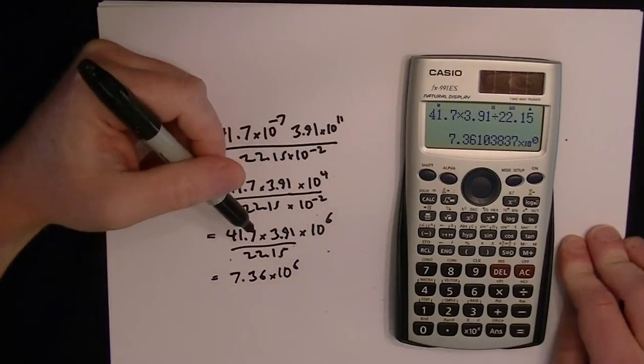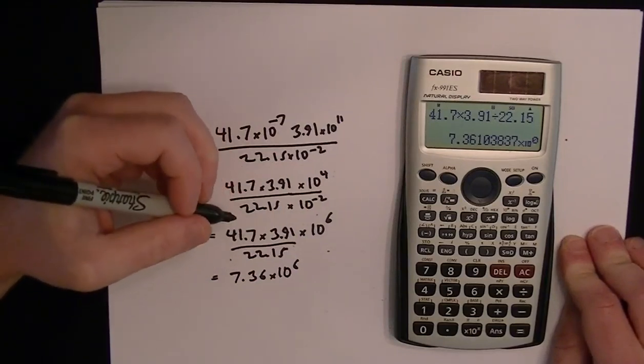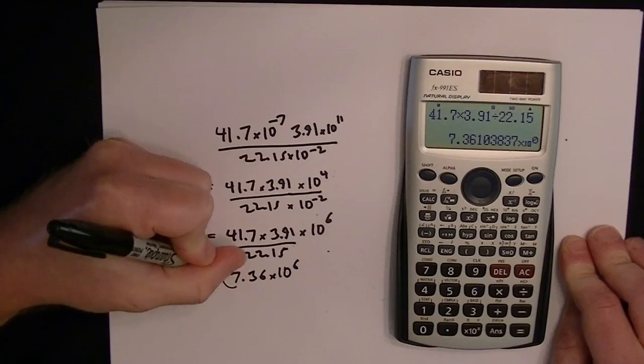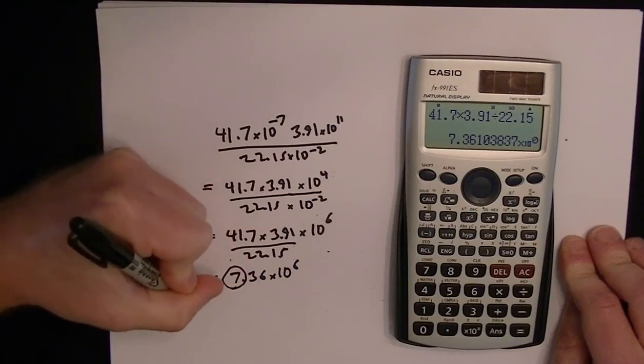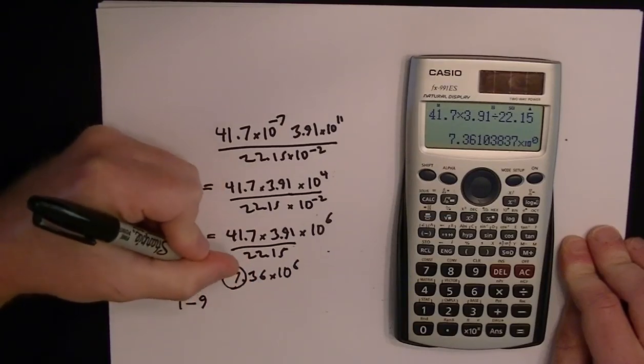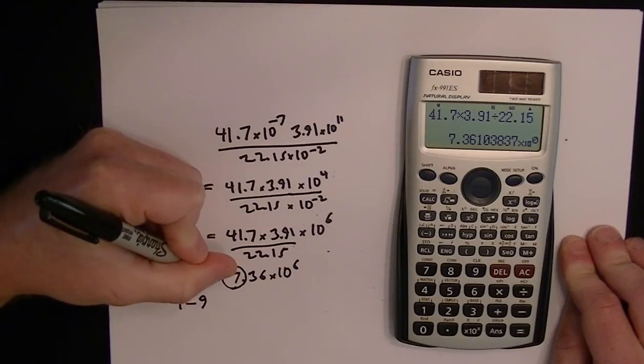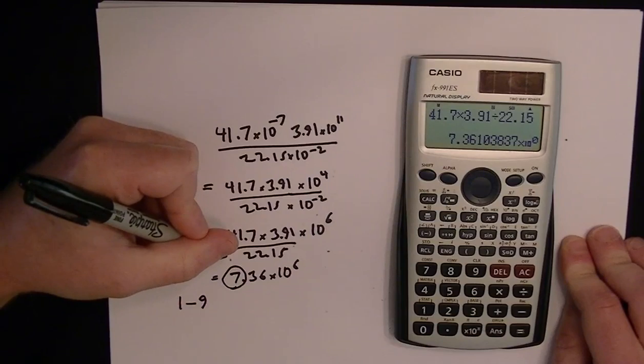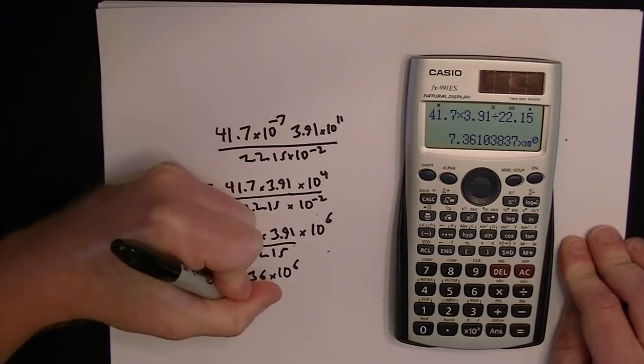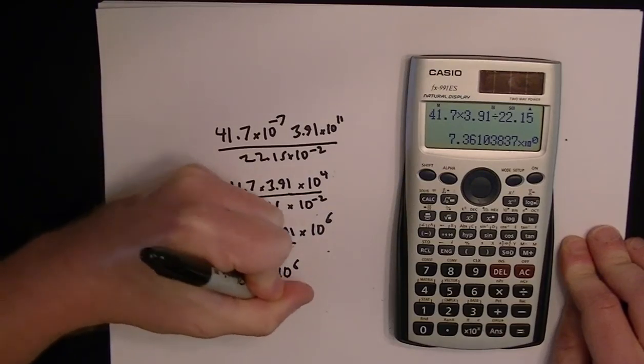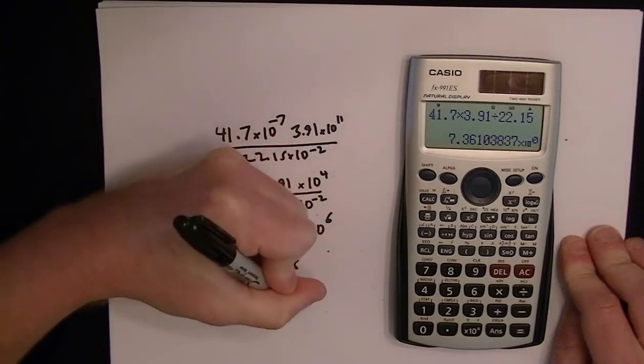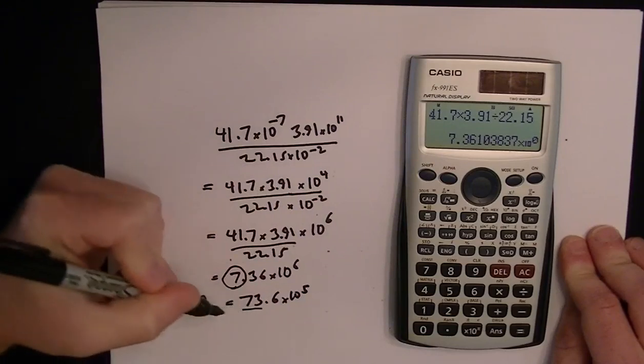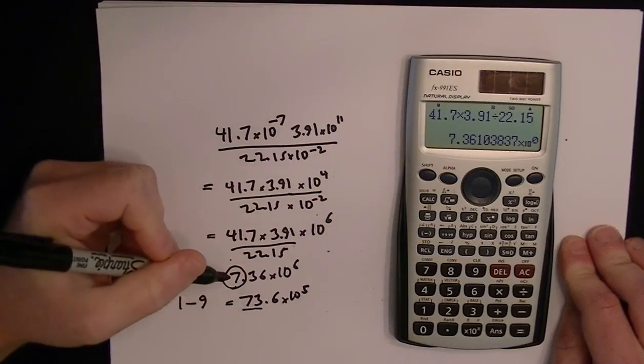Now, the key here is to realize what scientific notation means. It means that you've only got one number here in front of the decimal, and it has to be between 1 and 9. So there are different ways to write this answer that are mathematically the same, but they're not in scientific notation. We could write 73.6 times 10 to the 5th. But because we've got two digits here, it's not scientific notation.